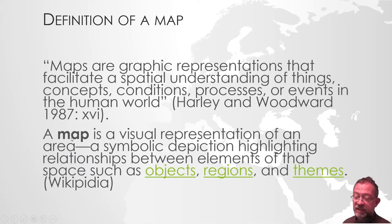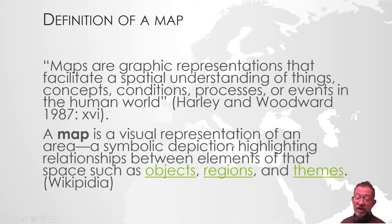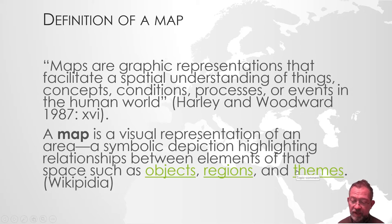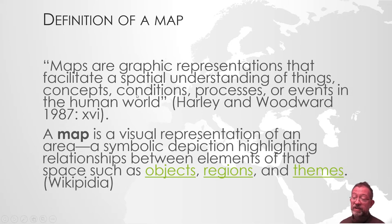Another definition is from Wikipedia, where they say: a map is a visual representation of an area, a symbolic depiction, highlighting relationships between elements of that space such as objects, regions or themes. This one differs in several points. First of all, it talks about a symbolic depiction. There is nothing in Harley and Woodward's definition that says it has to be a symbolic depiction — it talks about a graphic representation. Here we talk about substituting elements with symbols.